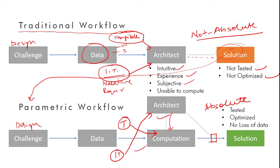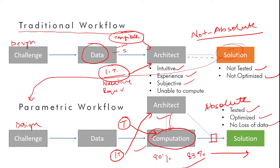The solutions produced parametrically are tested, optimized, and there is no loss of data. The computer can tell you that your building is 83% optimized in terms of solar radiation — if you're happy with 83%, move forward; if you want 90%, go back, tweak the inputs, produce a new solution. The biggest outcome of parametric architecture is that your decisions become informed — it is no longer guesswork, but informed decisions that you are making.